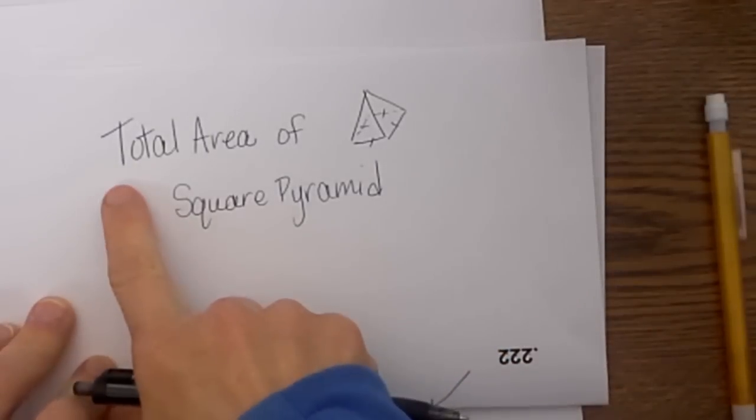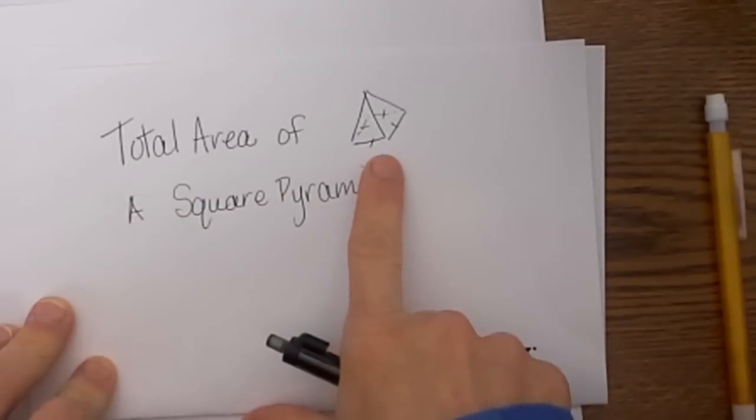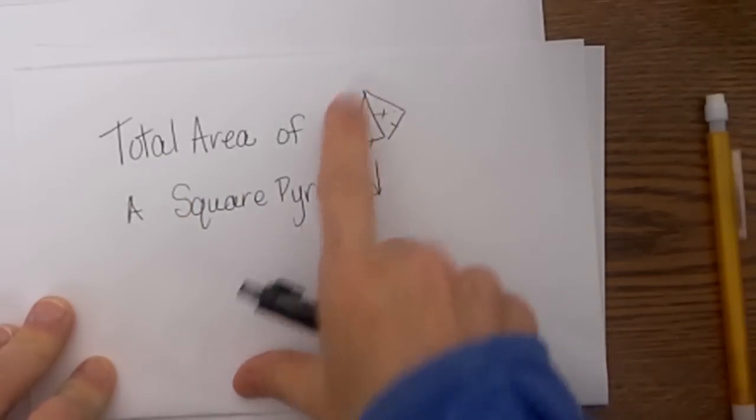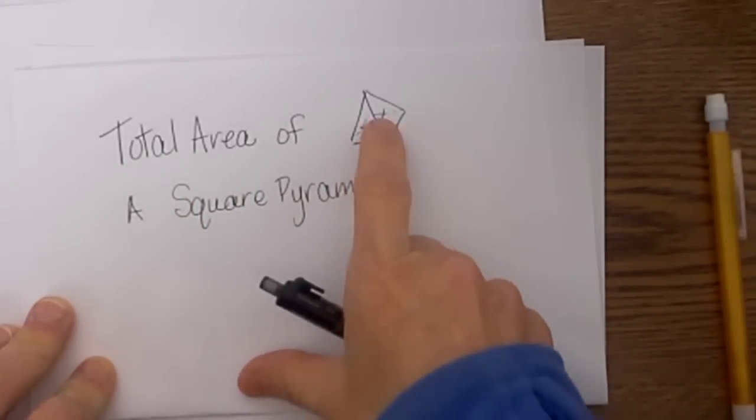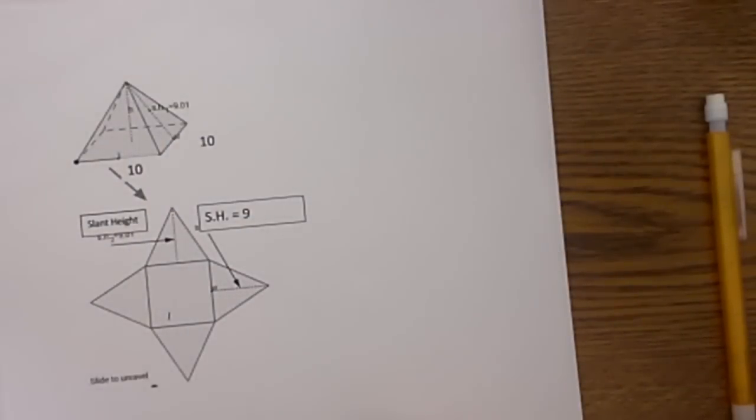Hi! Welcome to Moo Moo Math. Today we are looking at how to find the total area of a square pyramid. A square pyramid has a point or apex at the top and the base is a square. So let's look at one.